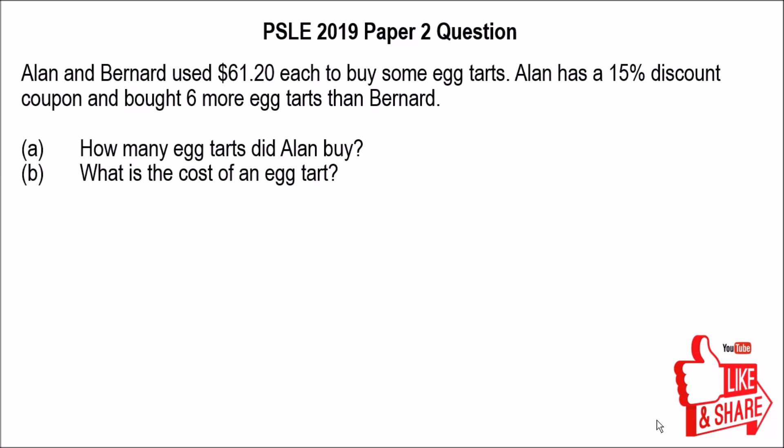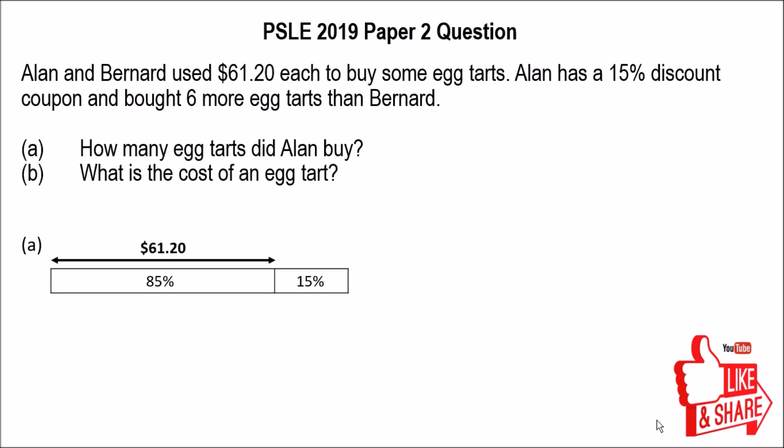With that, we can actually draw the model. Alan paid only 85% of the amount and got 6 more tarts because of the 15% discount. So the 85% represents $61.20 and the 15% represents 6 egg tarts. With that, we can actually find the number of egg tarts Alan bought.